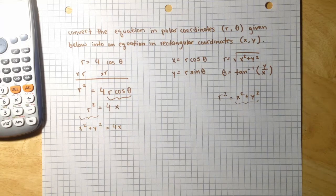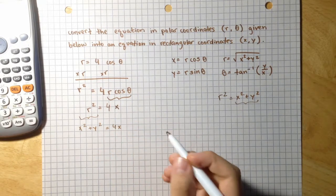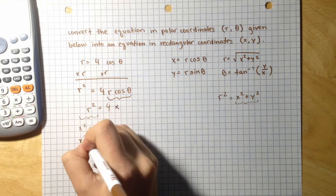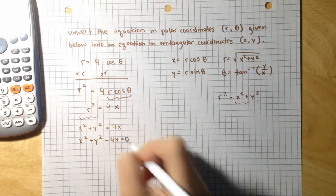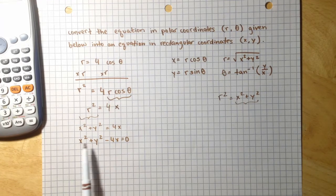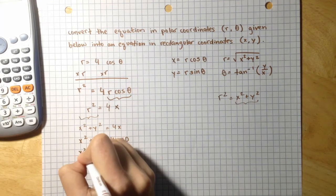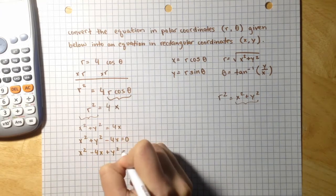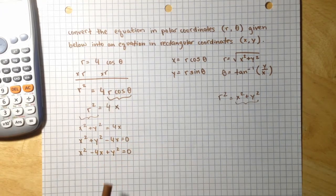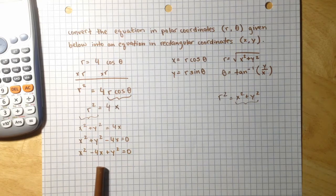Now, let's subtract this 4x over to the other side. x squared plus y squared minus 4x equals 0. And let's write x closer to x squared. So x squared minus 4x plus y squared equals 0.